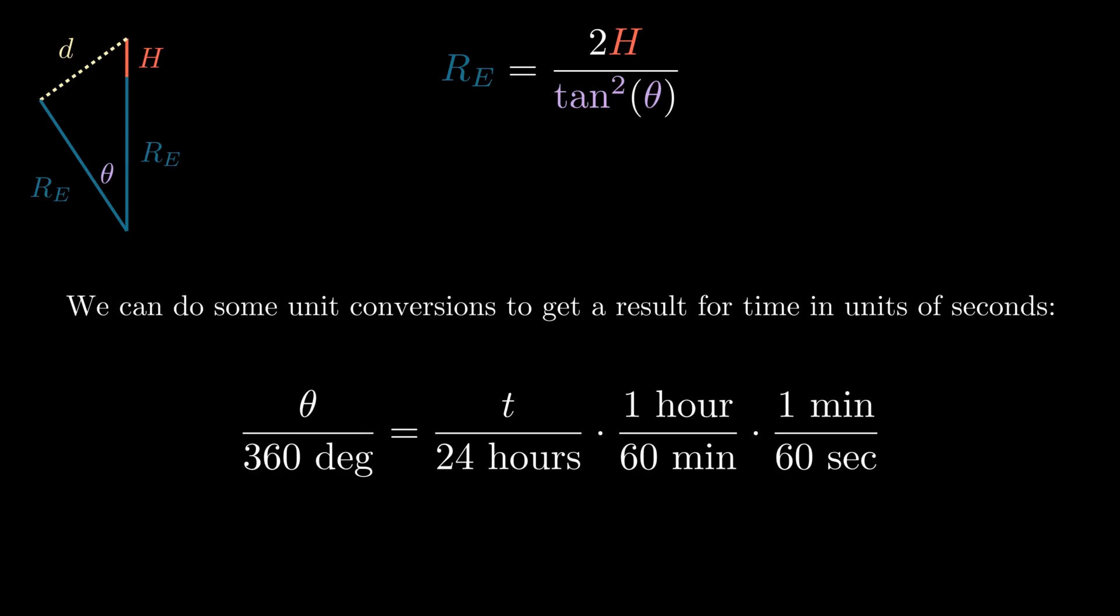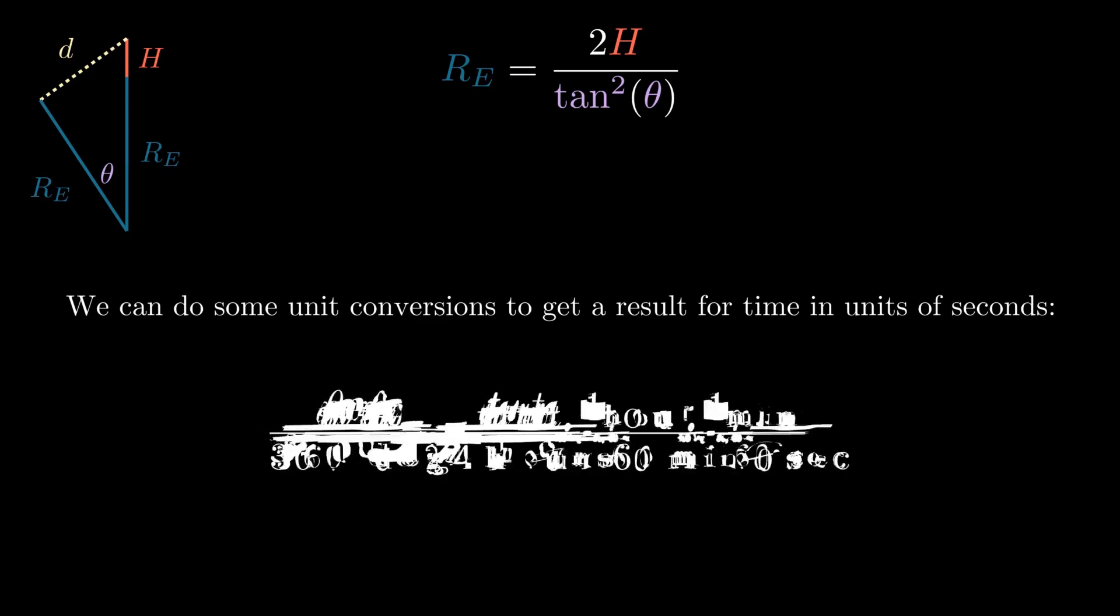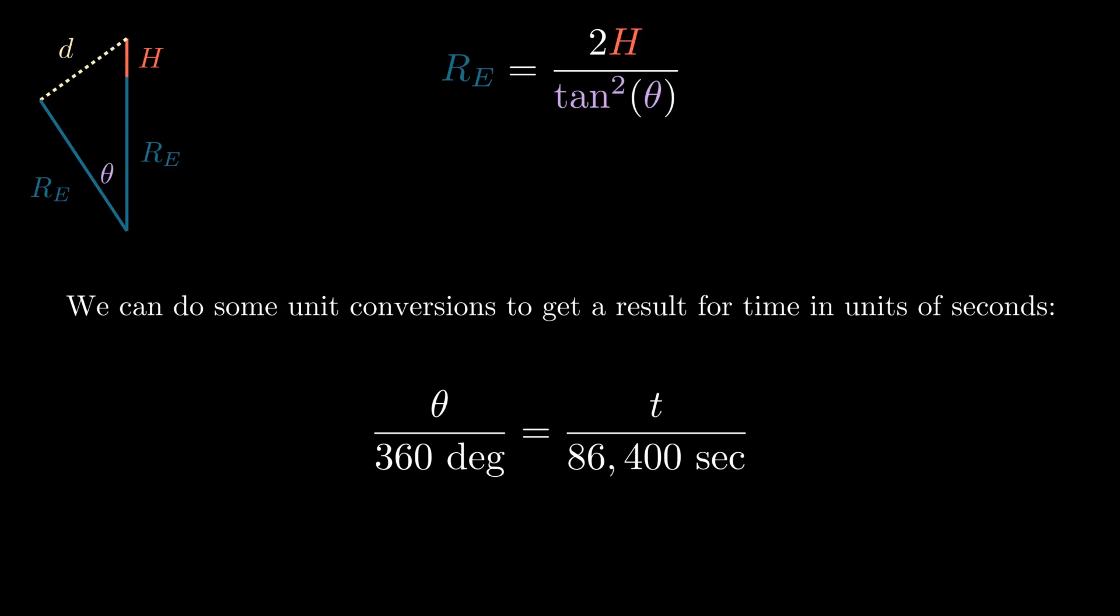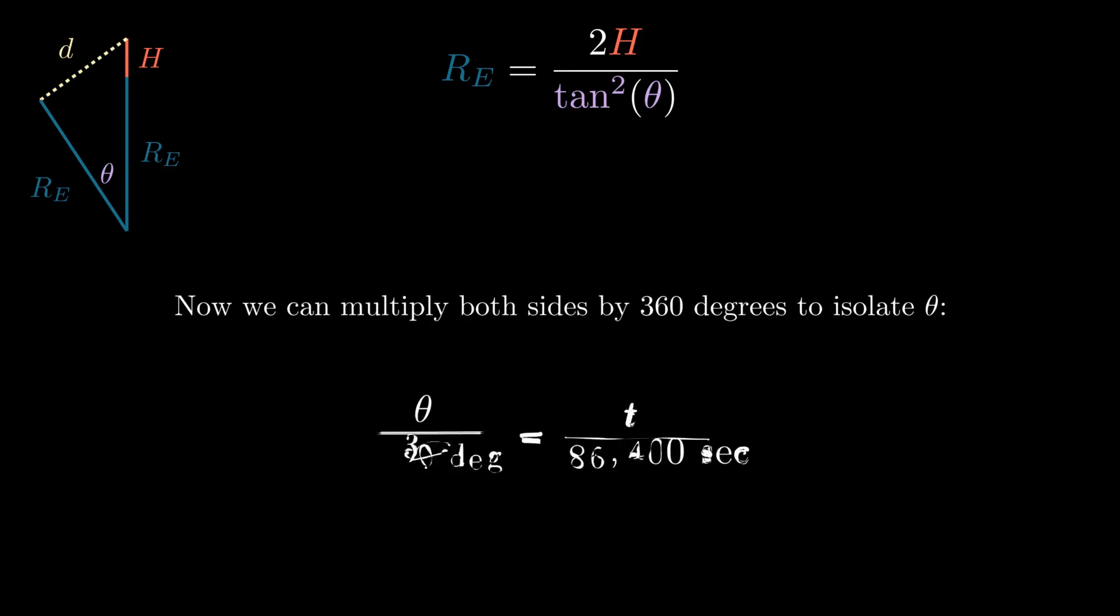There is a unit of hour in both the numerator and denominator, so they will cancel. The same for minutes. Multiplying all the values through, we multiply both sides by 360 degrees to isolate the angle theta, and then simplify the numbers and pull the units aside.